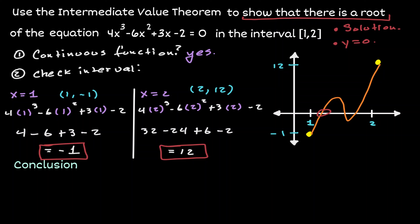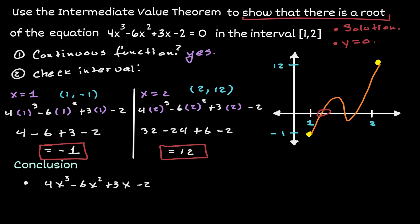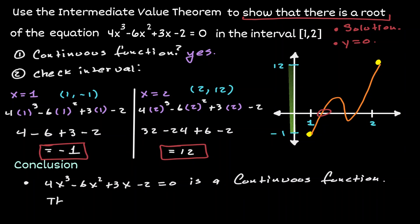So we know that there is at least one root within the interval from 1 to 2. Let's write down our conclusion. First, we acknowledge that the function is continuous. Then we observe that there was a y value of 0 between the y values obtained when we evaluate the function at x equals 1 and x equals 2. By the intermediate value theorem, we are guaranteed to have a minimum of one solution between the interval from 1 to 2.